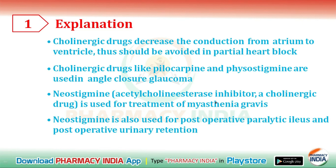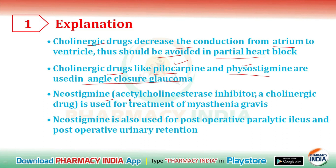Cholinergic drugs decrease conduction from atrium to ventricle, and thus should be avoided in partial heart block. Cholinergic drugs like pilocarpine and physostigmine are used in angle-closure glaucoma. Neostigmine, an acetylcholinesterase inhibitor and cholinergic drug, is used for the treatment of myasthenia gravis, and also for postoperative paralytic ileus and postoperative urinary retention.